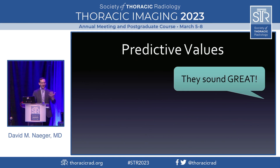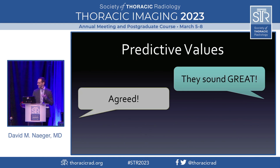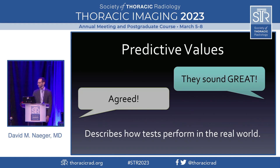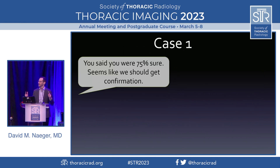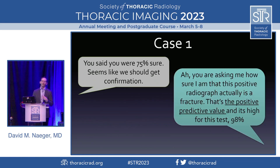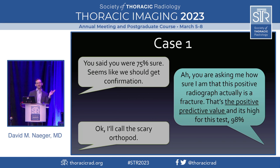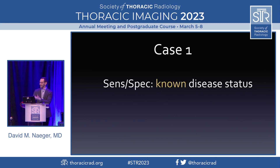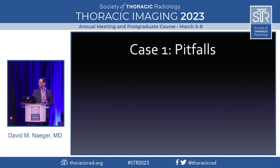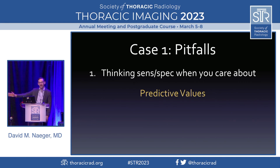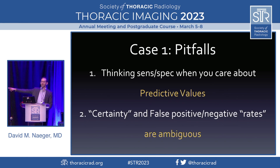These are what we should be using in real life — this is how tests perform in the real world. So wrapping up the orthopod case: when he said 'you seem 75% sure, maybe we should get an MRI,' you say, 'I get it — you're asking the chance that the radiograph confers an actual real fracture. That's positive predictive value. It's super high here, 98%. Don't worry.' And off he goes to call the orthopod — no MRI. Sensitivity and specificity apply when we already know the disease status; predictive values apply when we don't. A pitfall here was confusing sensitivity/specificity with predictive values, and using ambiguous terms like 'certainty' or 'rates.'